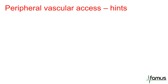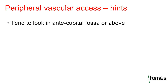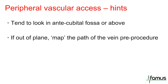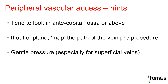Just a couple of hints to finish off with. We tend to look in veins which are in the antecubital fossa or above — so the brachial or cephalic veins — because anything below the antecubital fossa tends to be superficial and can be very difficult to access with ultrasound guidance. If you're using the out-of-plane technique, try and map the path of the vein for a few centimeters above and below your target, which allows you to know the course of the vein you're trying to access. It's important to apply very little pressure when performing peripheral vascular access, particularly if the veins are superficial, because it's easy to compress them and make them impossible to access.